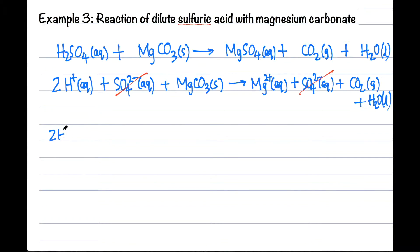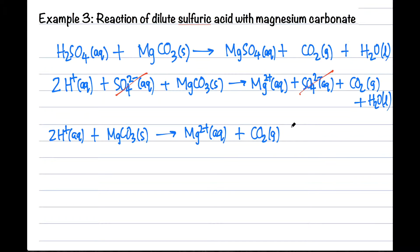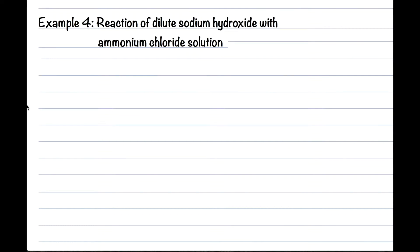We'll write up our final ionic equation for this example. For the next example, do pause the video if you are confident and attempt the question before continuing. In the reaction between dilute sodium hydroxide and ammonium chloride — given that this is dilute and this is a solution, we know that both are aqueous. Let us change the words into chemical formula first.